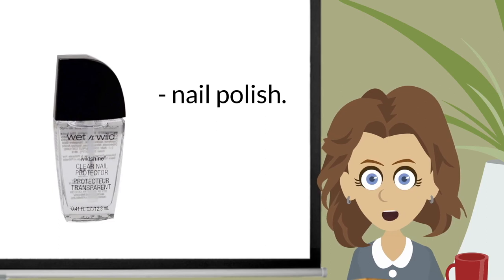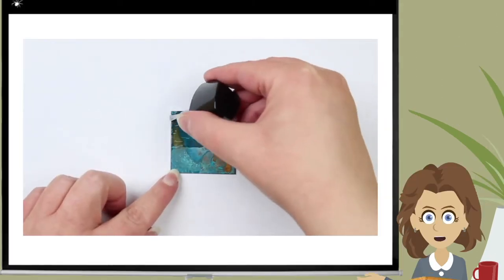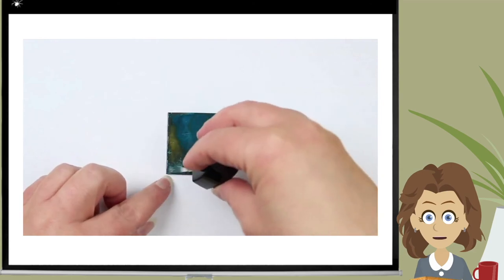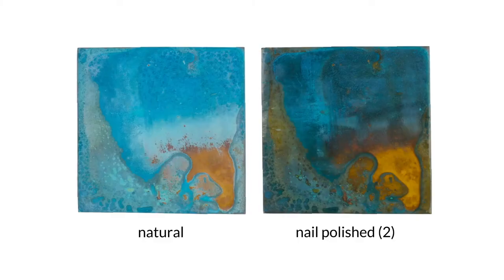Two or three thin layers are best. More is not always better with paint-on lacquers. Too many layers can cause peeling.